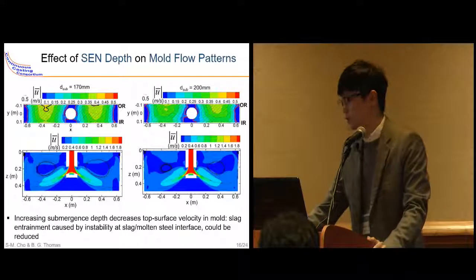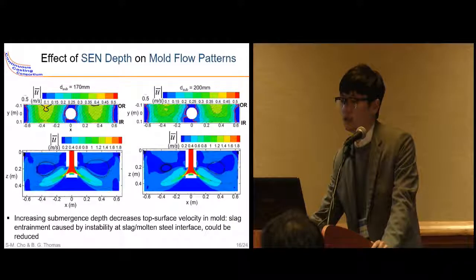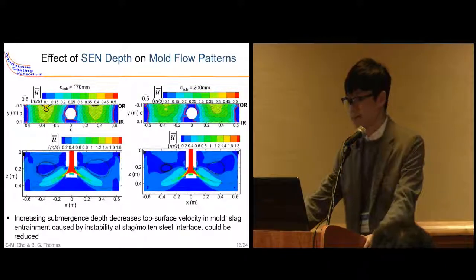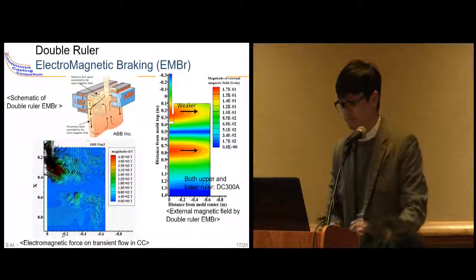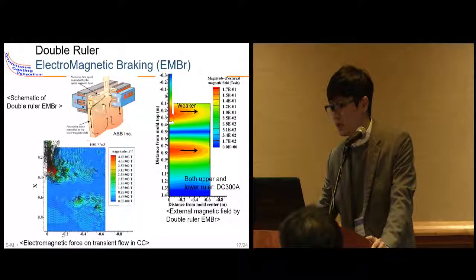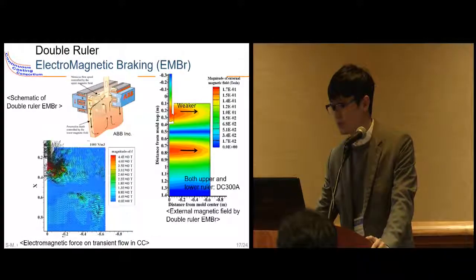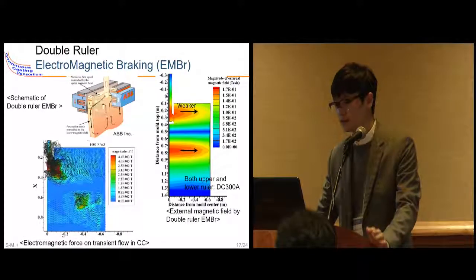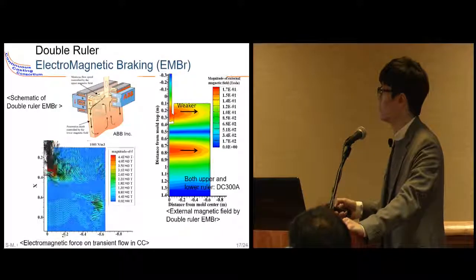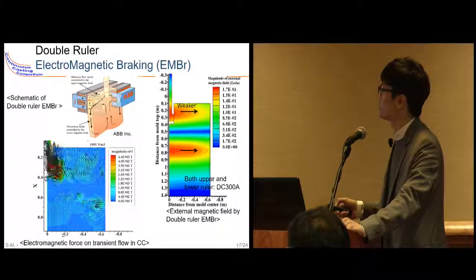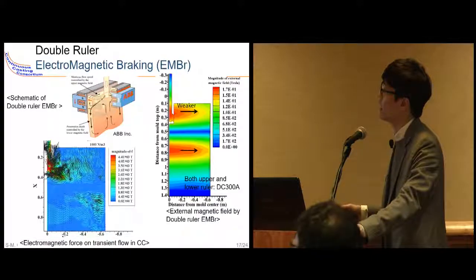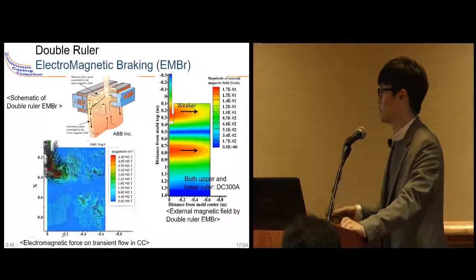Another process parameter investigated is the submerged entry nozzle step geometry. We found that increasing the nozzle step decreases the top surface velocity in the mold. Another way to control mold flow is by employing an electromagnetic system. Steel is a conducting material, so a magnetic field externally applied by the system induces current and produces a Lorentz force. This slide shows the double-ruler electromagnetic braking system (EMBR), which has two rulers; at their positions we see higher magnetic field peaks, resulting in a higher Lorentz force that brakes the jet flow into the mold.